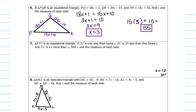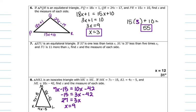For number eight — isosceles again — draw the figure and set 7X minus 15 equal to 10X minus 42. Solve for X and you get 9. Plug 9 back into one of the sides: 10 times 9 minus 42 is 48 for the length of ML.